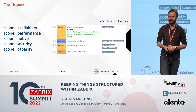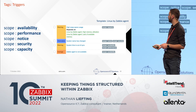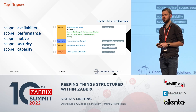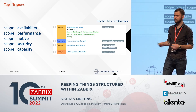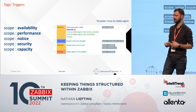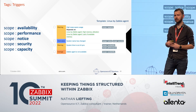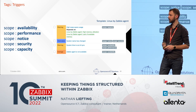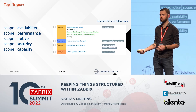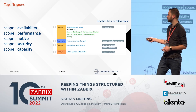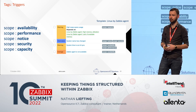Then we have the third level: triggers. This one's easy — we just have to pick one of the five predefined options. These tags have been well thought out and basically any trigger we create can fit into one of these categories, so we can easily distinguish what the trigger is going to indicate — whether it's an availability issue, a performance issue, and so on. We have five different groups to identify triggers and classify them later on.